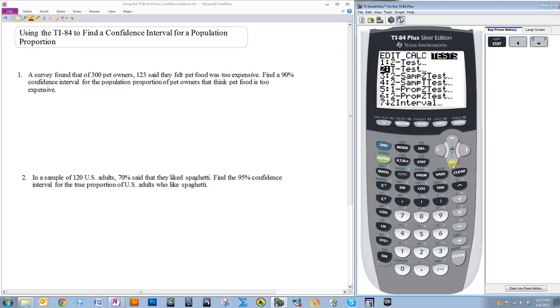And you want to scroll all the way down to A, which should be the eleventh thing. OnePropZint.